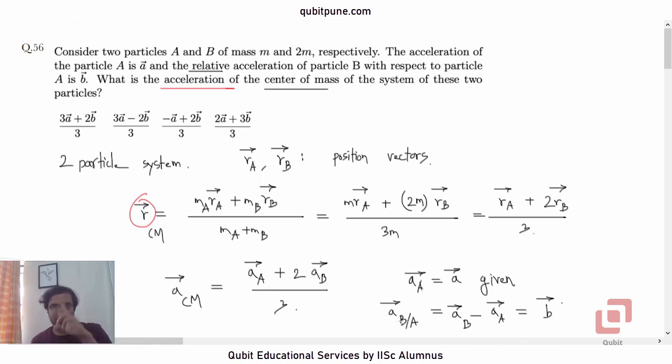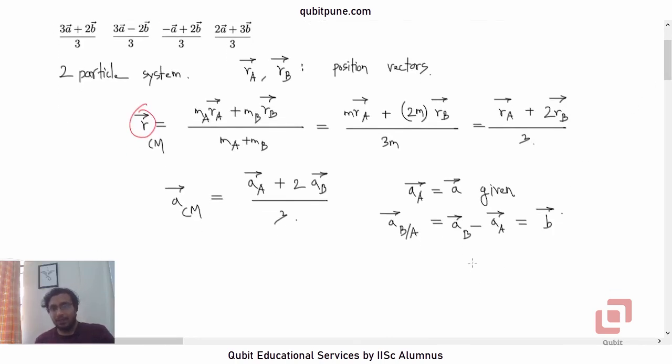It is a_b minus a_a, this is equal to b bar. We know how to get the acceleration, absolute acceleration from relative acceleration. This is b with respect to a, so it is b minus a.